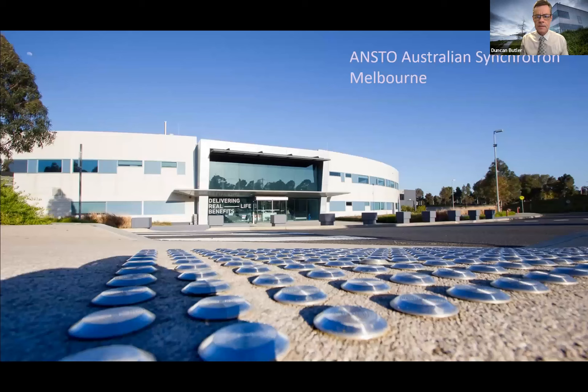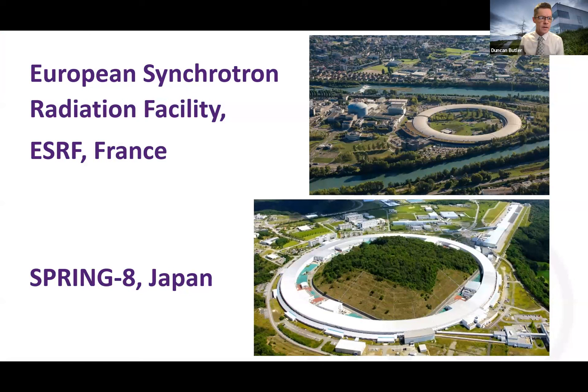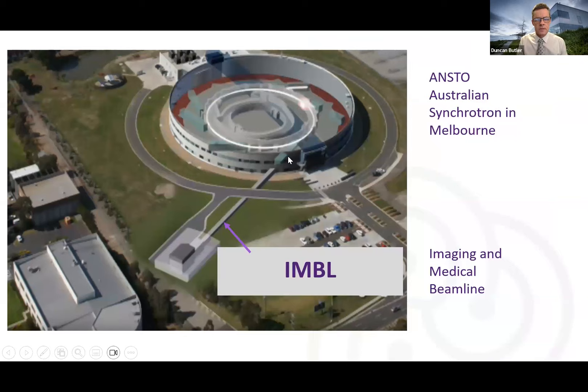This is the one I spent the most time at, the Australian synchrotron in Melbourne. But I did want to call out also the ESRF in France, in Grenoble, and Spring-8 in Japan. These are big synchrotrons that have had or have large radiotherapy beamlines as part of them. They do lots of other things as well, of course. Spring-8 in particular is 8 GeV. This is a really big synchrotron. This is the Australian synchrotron, and the Imaging and Medical Beamline is a long beamline, about 130 meters long.